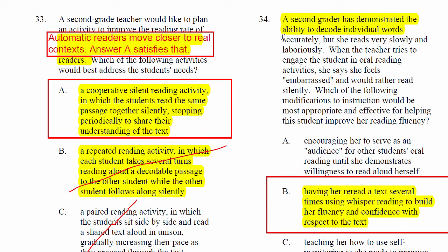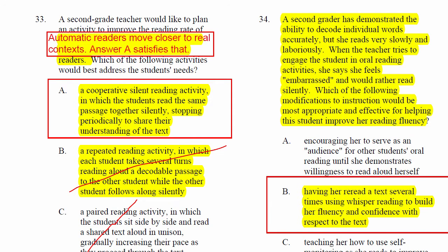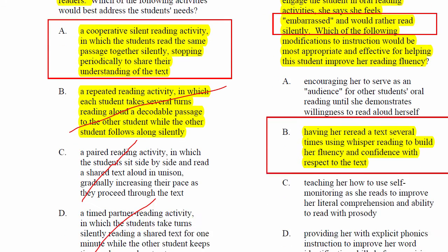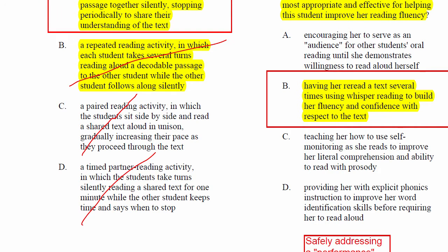Question 34: A second grader has developed the ability to decode individual words accurately, but reads very slowly and laboriously. When the teacher tries to engage the student in oral reading activities, she says she feels embarrassed and would rather read silently. Which of the following modifications to instruction would be most appropriate and effective for helping the student improve her reading fluency? It's not just a fluency issue — this is somebody who feels slightly embarrassed, a performance issue, doesn't want to read in front of peers. The best thing to do is have her reread a text several times using whisper reading to build fluency and confidence.